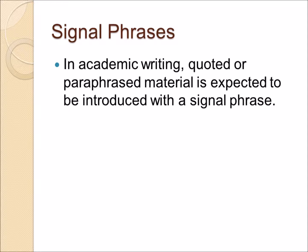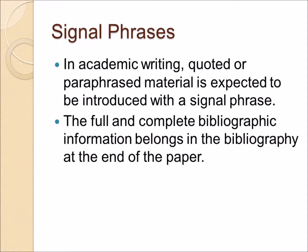In academic writing, quoted or paraphrased material is expected to be introduced with a signal phrase. A signal phrase simply lets the audience and or reader know that what follows is drawn from an outside source. Some students provide full and complete bibliographical information in their signal phrases, and this is simply tiresome for the reader. The full and complete bibliographic information belongs in the bibliography at the end of the paper. A signal phrase, however, can provide the name of the author or authors. A reference to the title of the work should only be included in the signal phrase if you are using multiple sources from the same author in your paper.